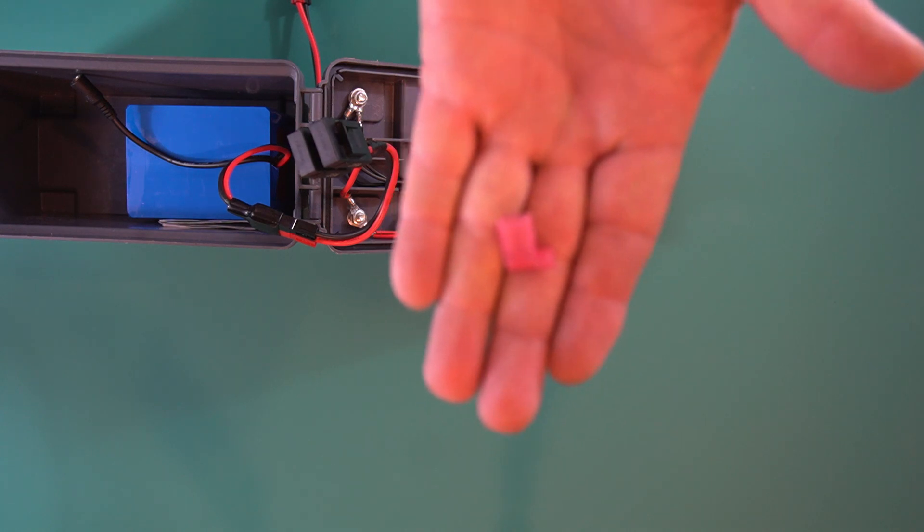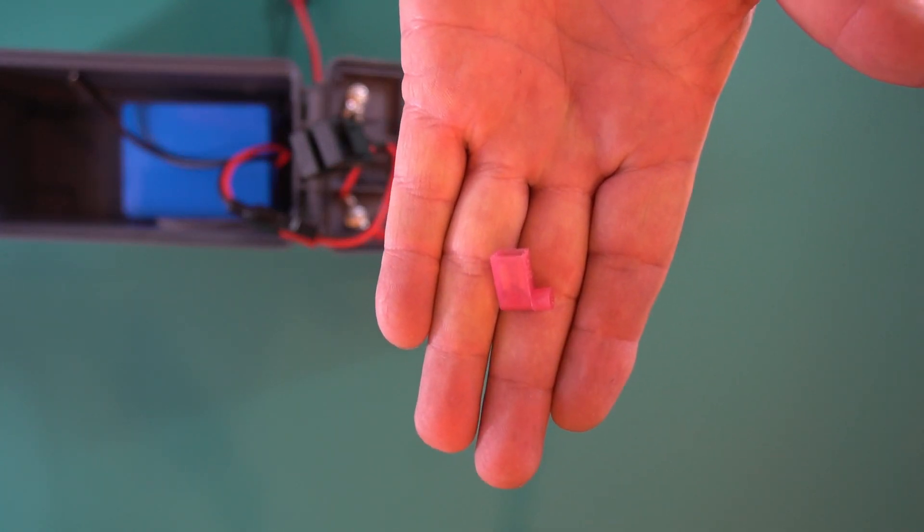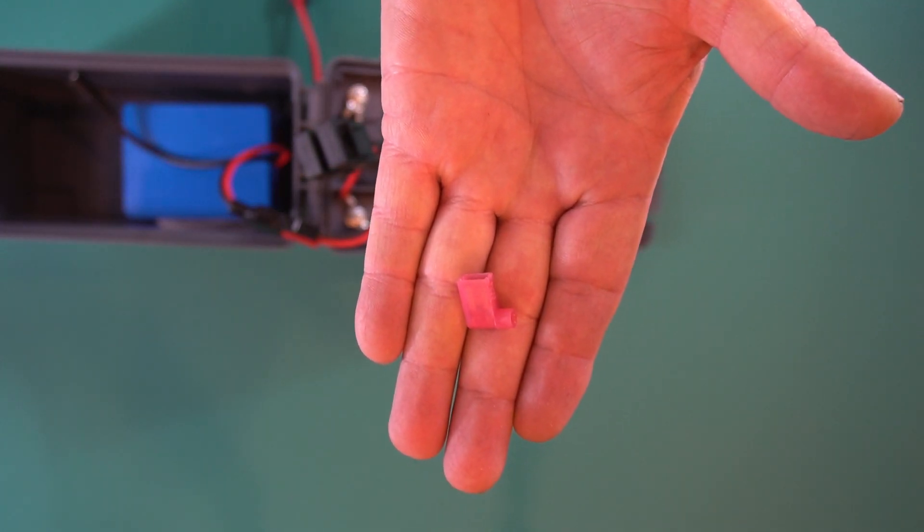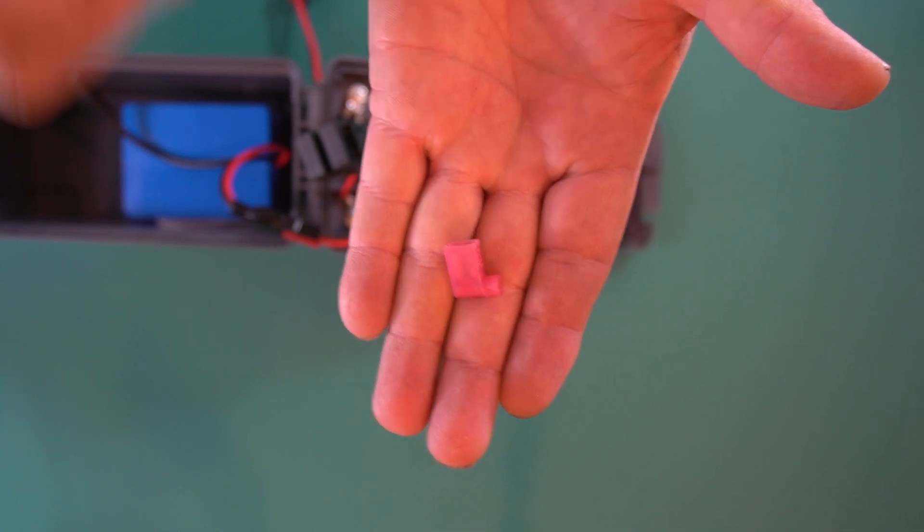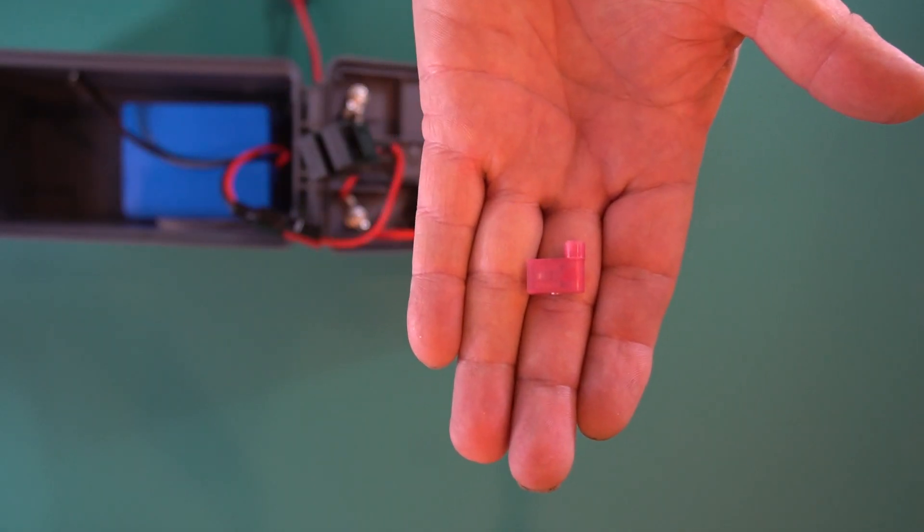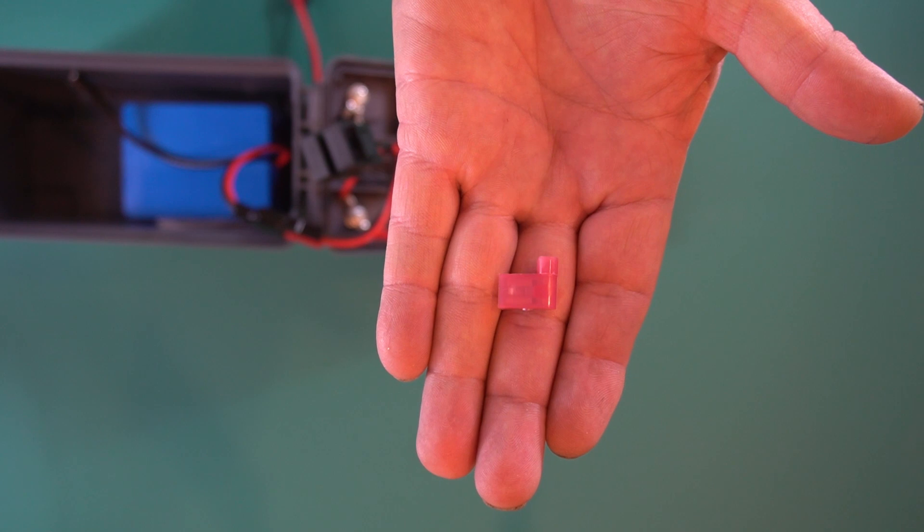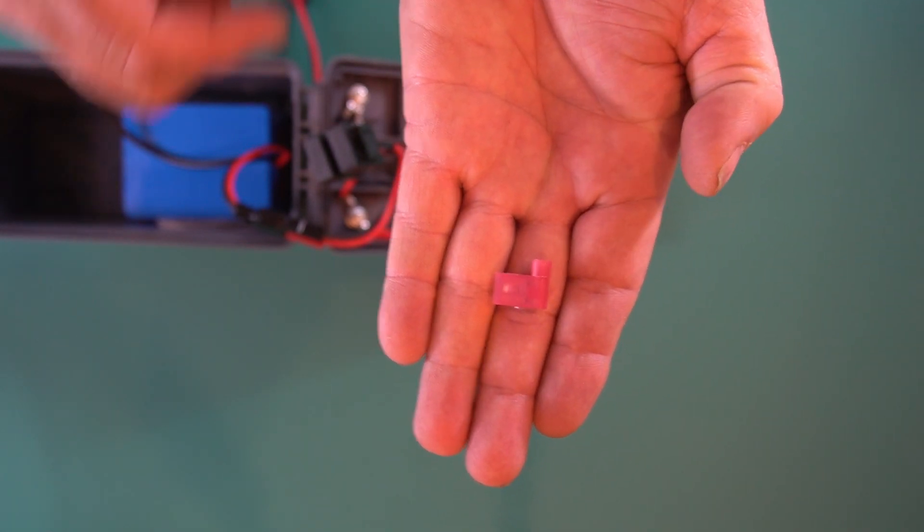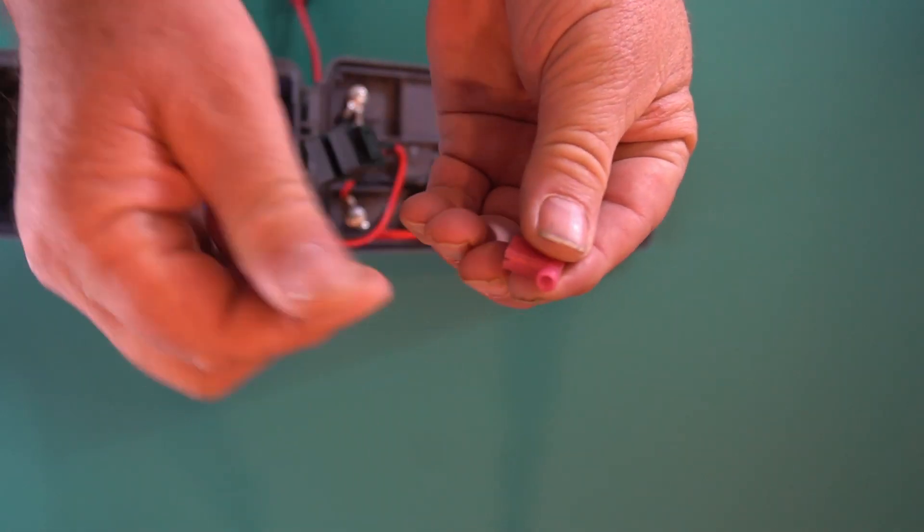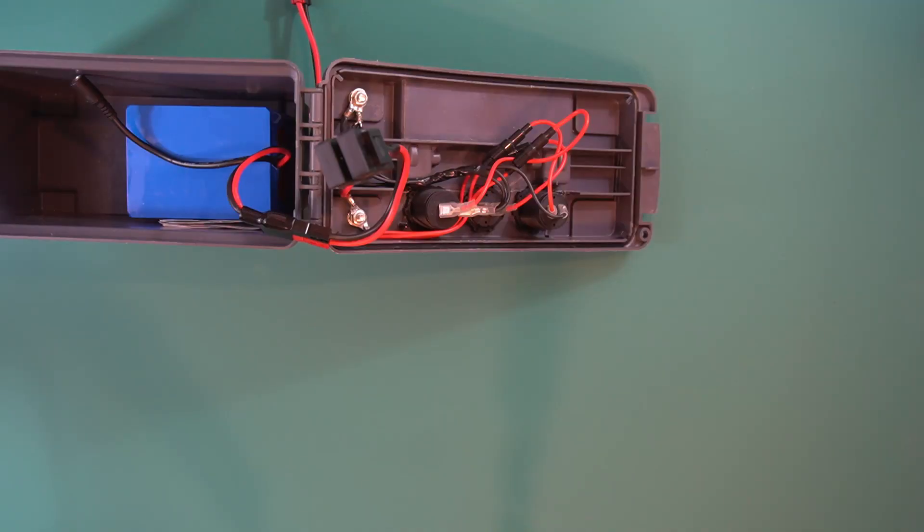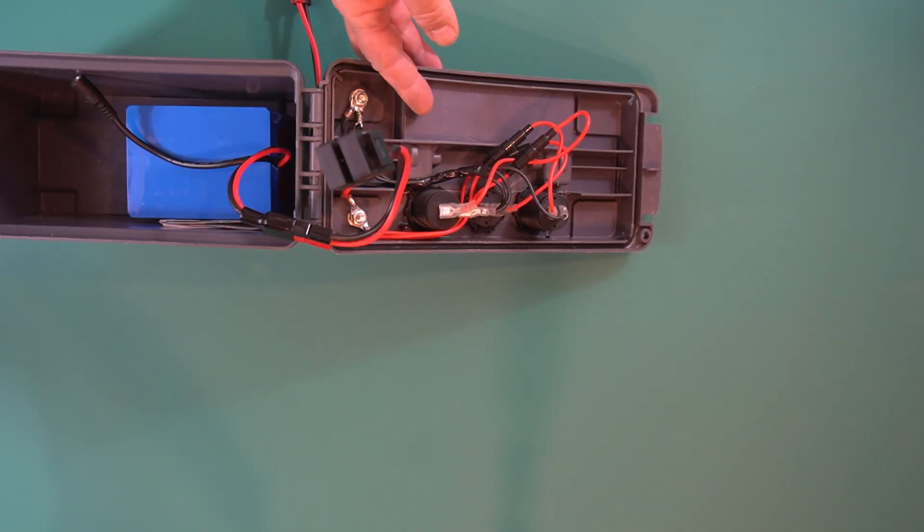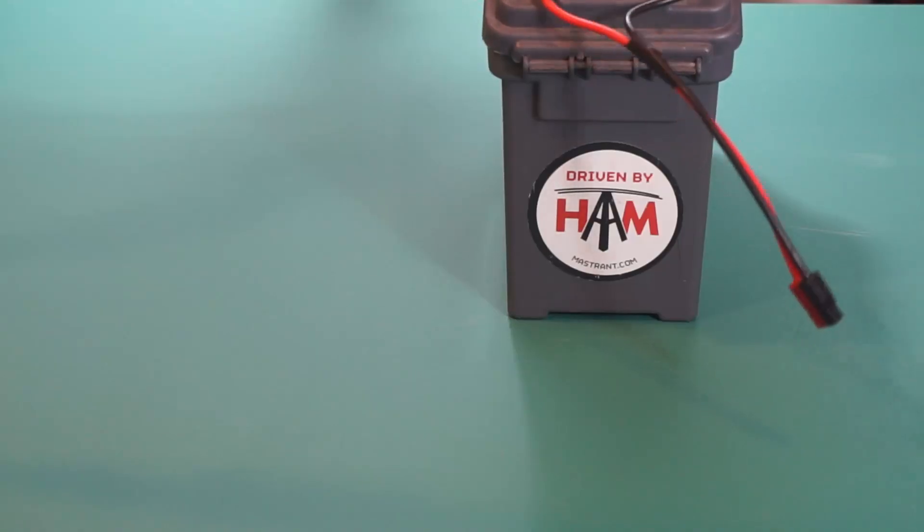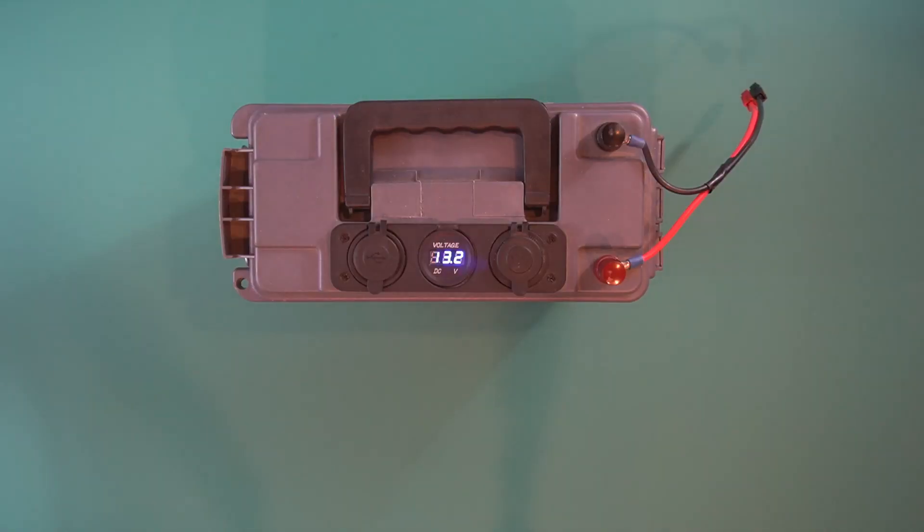Now I just recently picked these up, this is basically a right angle so the wire won't stick out as far. You just crimp it on just like the regular ones.